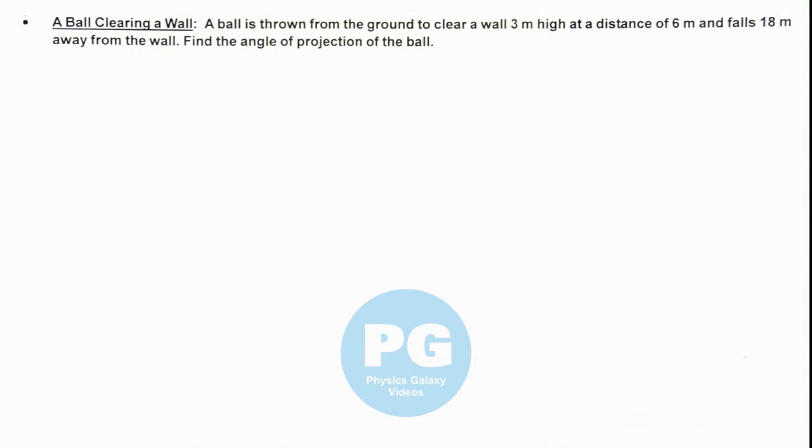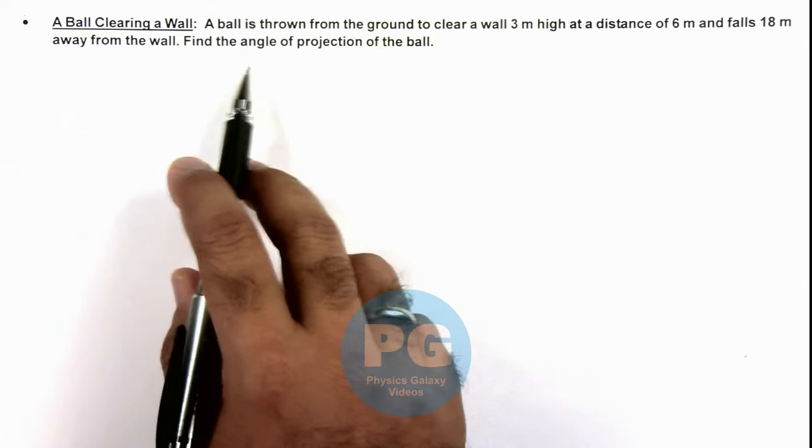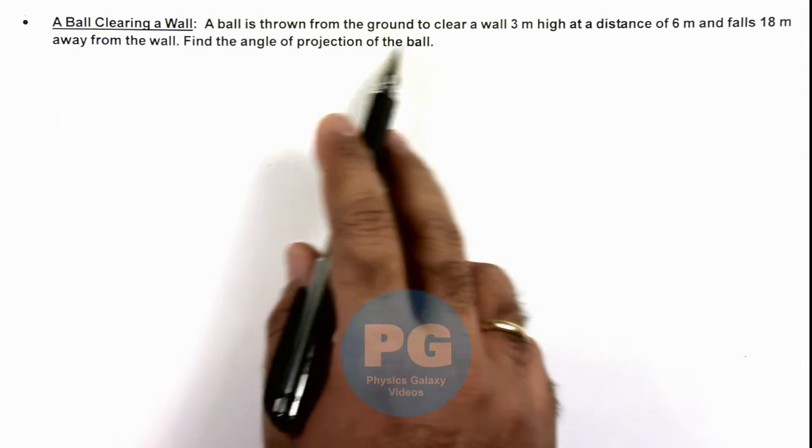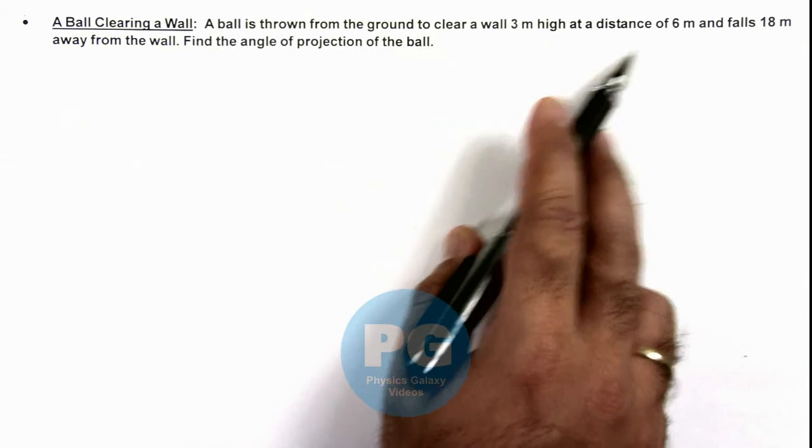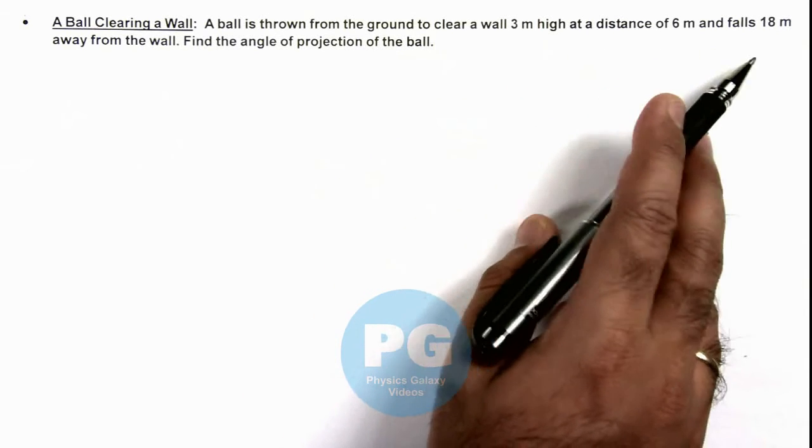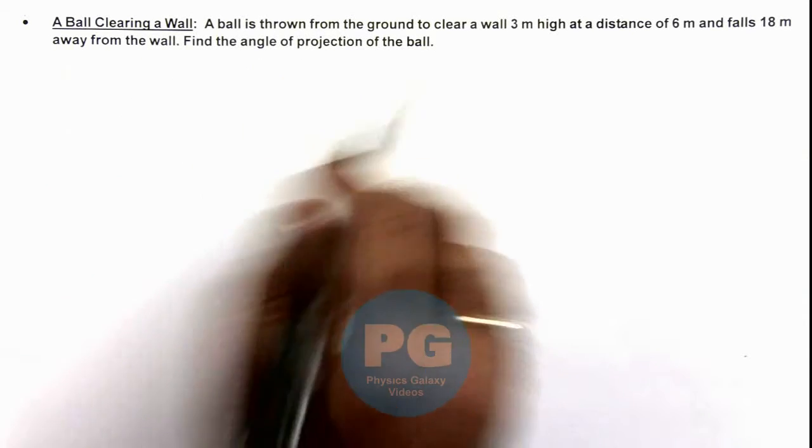In this illustration we'll see a situation when a ball clears a wall. Here we are given that a ball is thrown from the ground to clear a wall 3 meters high at a distance of 6 meters and falls 18 meters away from the wall. We are required to find the angle of projection of the ball.